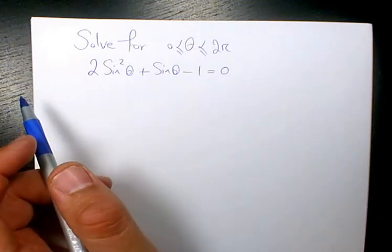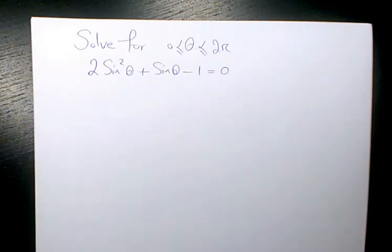What's up guys, this is Masi. Welcome to my channel. You will learn in this video how to solve 2 sine squared theta plus sine theta minus 1 equals to 0, where theta is between 0 and 2 pi.